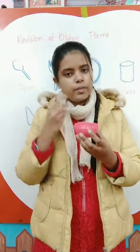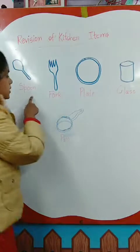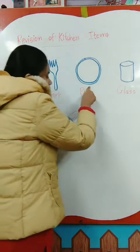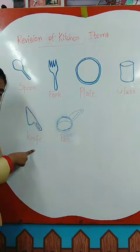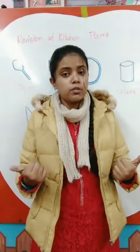So children, I hope that you have learned all the kitchen items. We will revise one more time: this is a spoon, this is a fork, this is a plate, this is a glass, this is a knife, and this is a pan. So these were your kitchen items. I hope you have enjoyed this video. Thank you for watching. We will meet in the next session. Bye, take care, have a nice day.